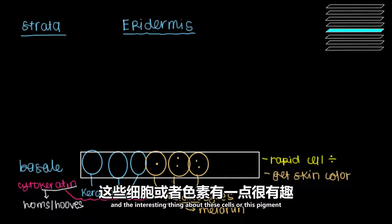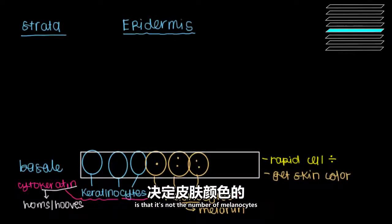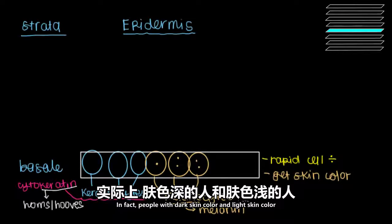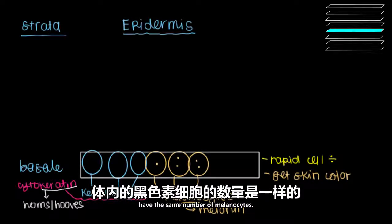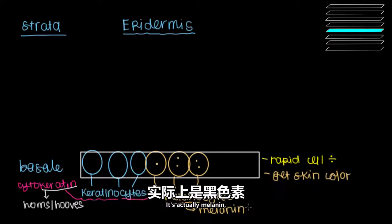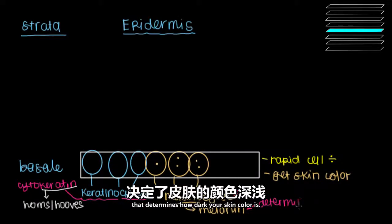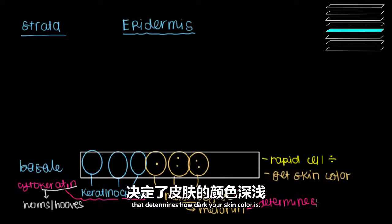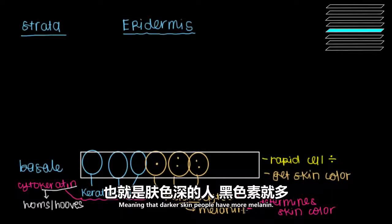The interesting thing about melanocytes is that it's not the number of melanocytes that determines how dark your skin is. In fact, people with dark skin and light skin have the same number of melanocytes. It's actually the amount of melanin you have that determines how dark your skin color is, meaning that darker-skinned people have more melanin.